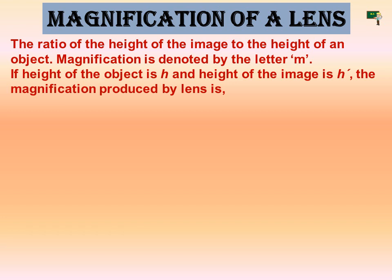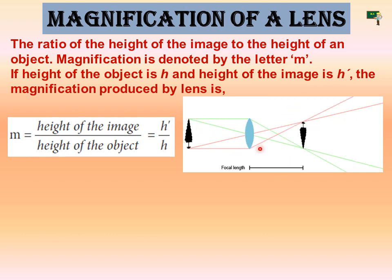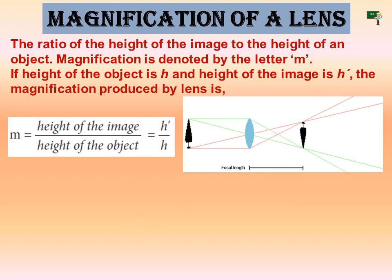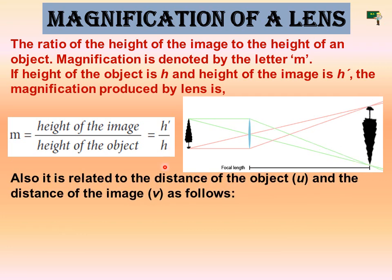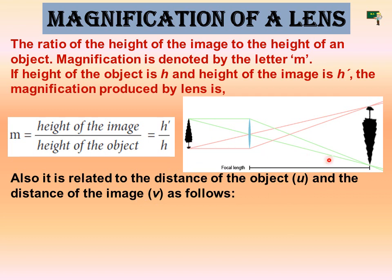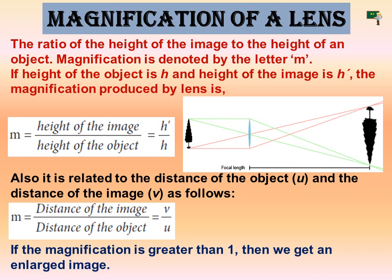If the height of the object is H, then the height of the image is H dash. You can see what magnification does — this is one object, and using magnification, you can magnify the object into such a big image. M is equal to the height of the image divided by the height of the object, which is H dash by H. Also, it is related to the distance of the object U and the distance of the image V. M is equal to V by U.